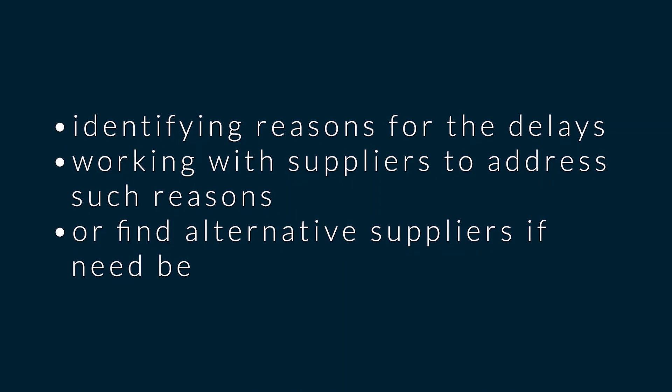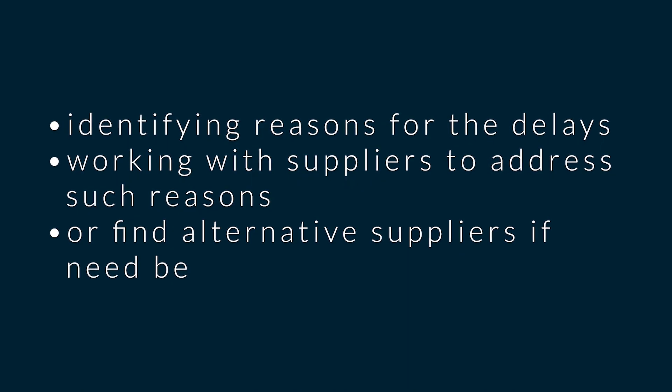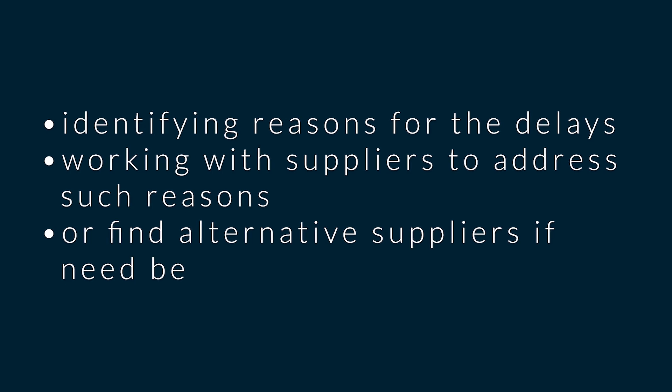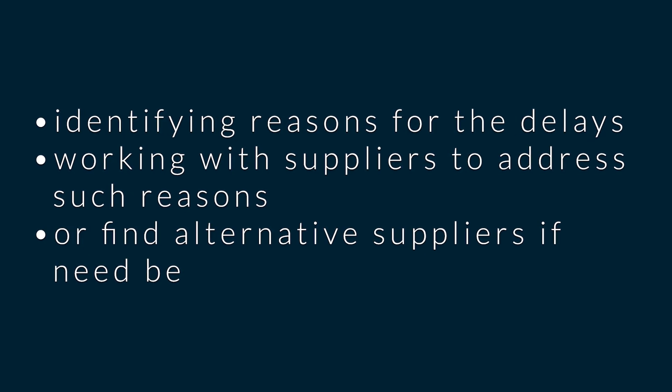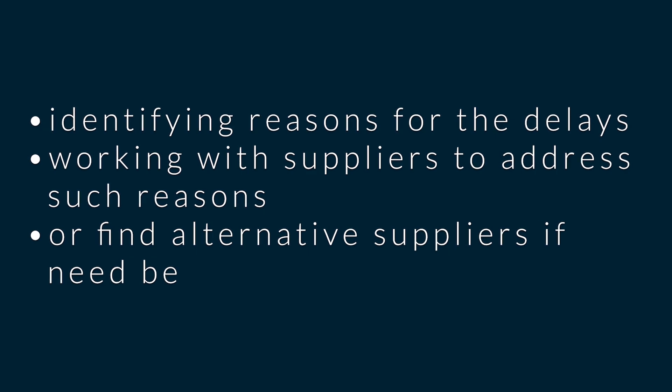You figure out their delivery rate is 92% but your target is 95%. Because the KPI has shown what the supplier is achieving or missing, you can now identify reasons for the delays, work with the supplier to address those reasons, or find alternative suppliers.